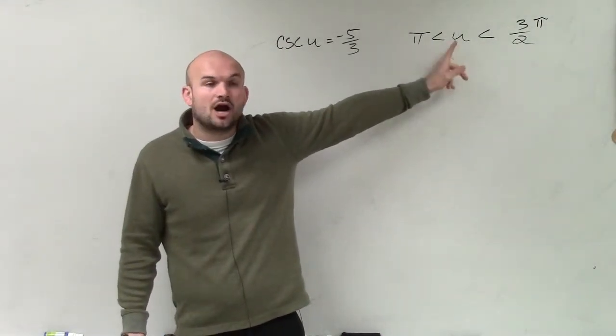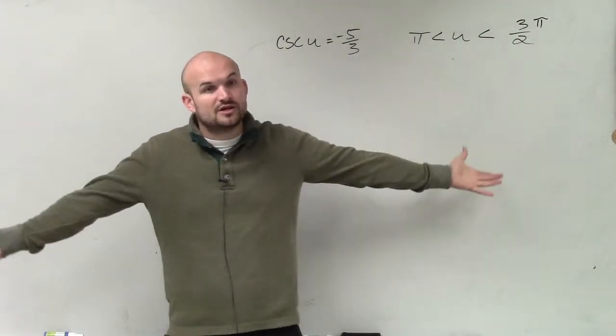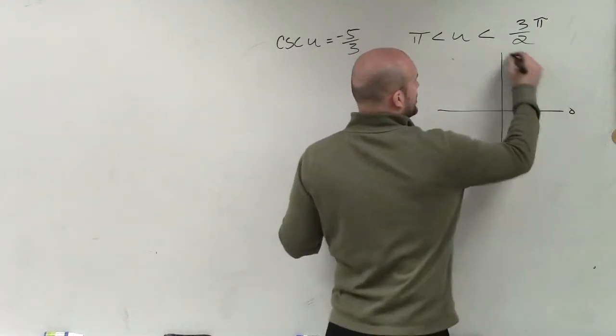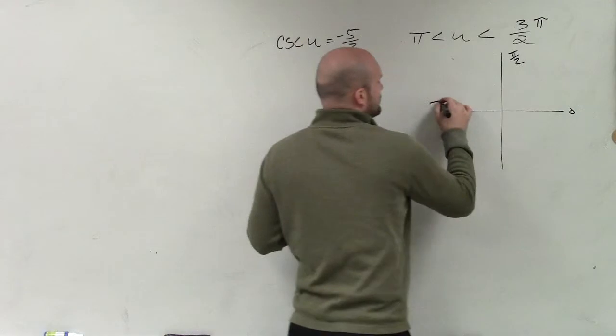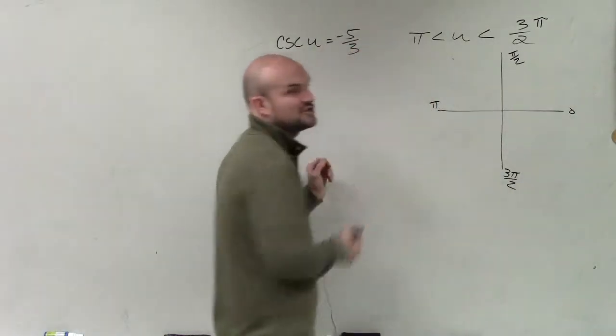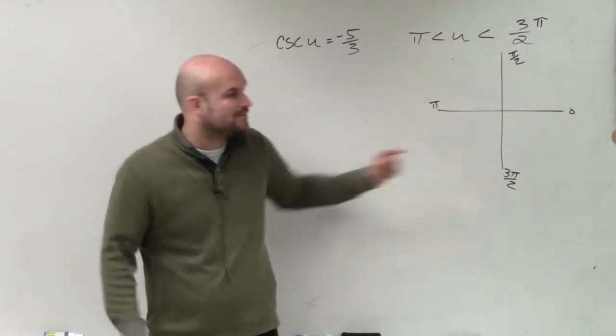And our constraint says our angle has to be between pi and 3 pi over 2. So we need to determine which quadrant that's going to be in. Well, if this is 0, that's pi over 2, pi, and that's 3 pi over 2 if we're going into the measurement of an angle. Therefore, I know that's going to be in the third quadrant because it has to be between pi and 3 pi over 2.